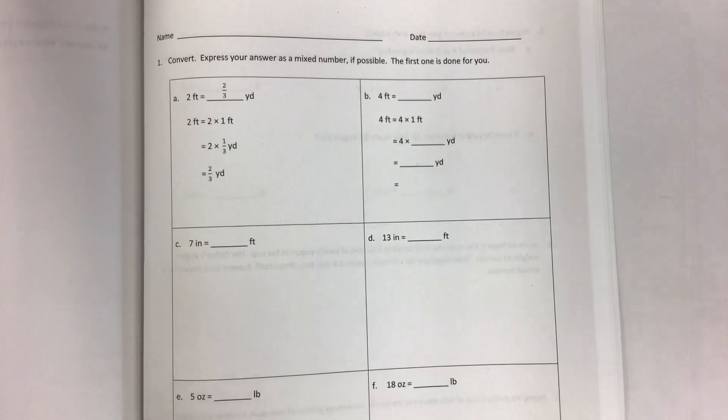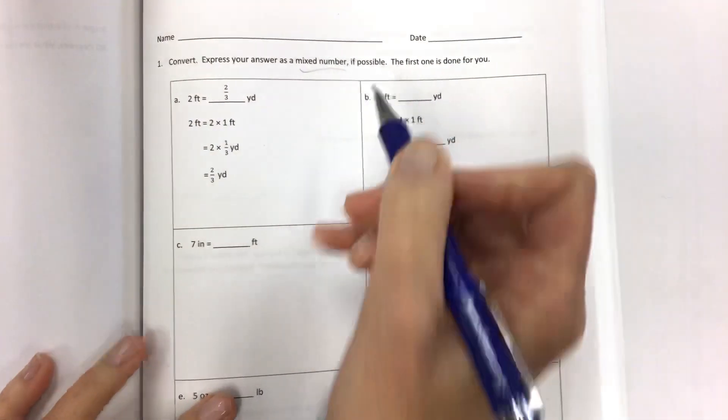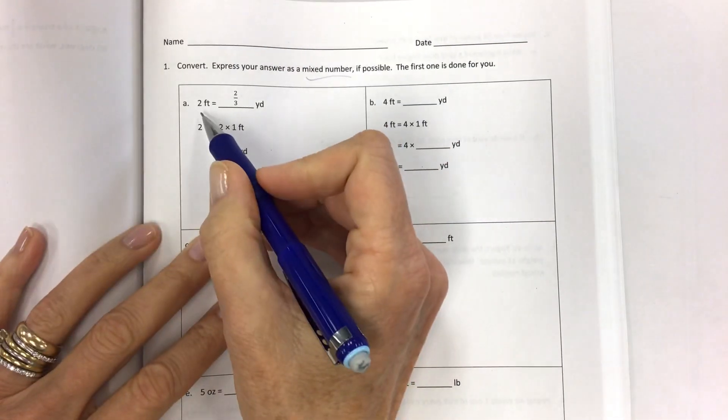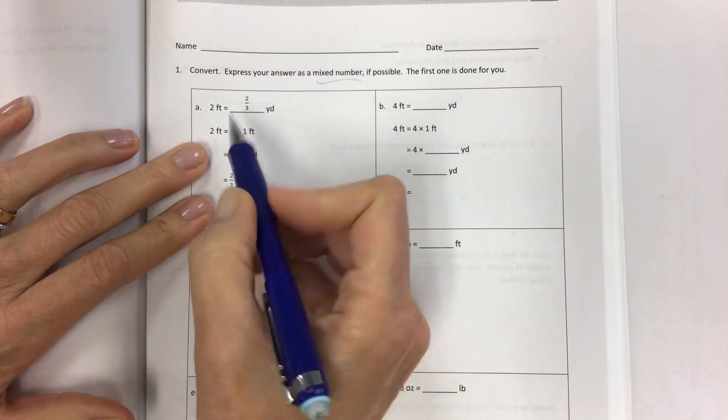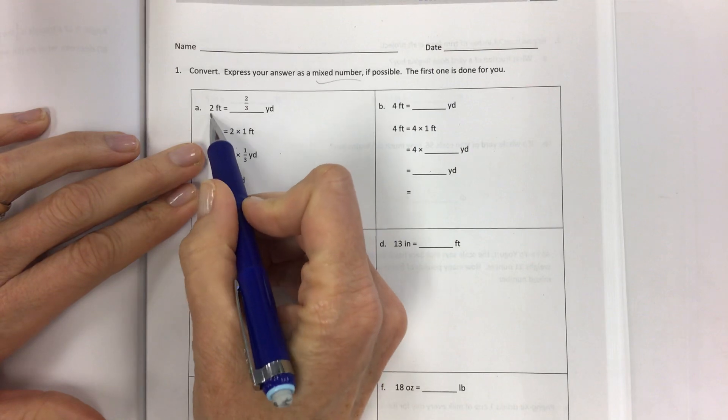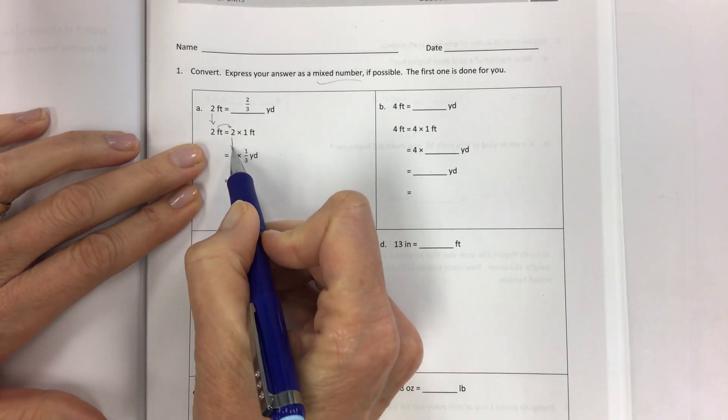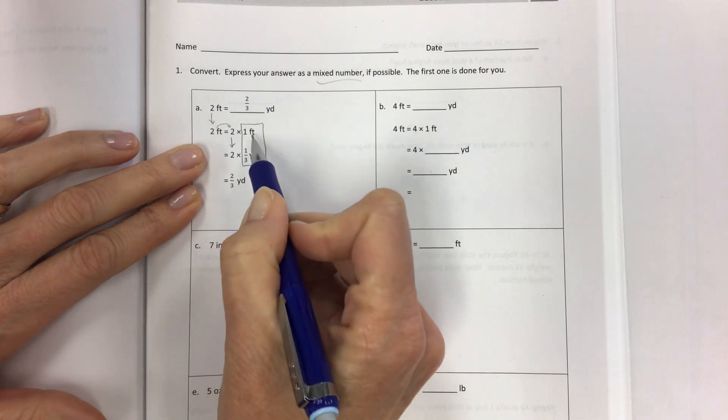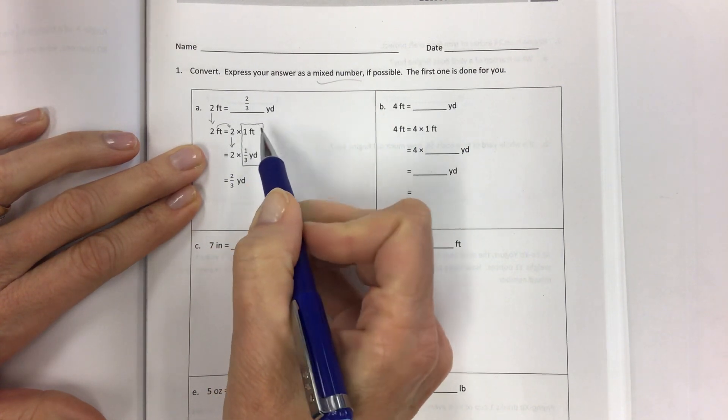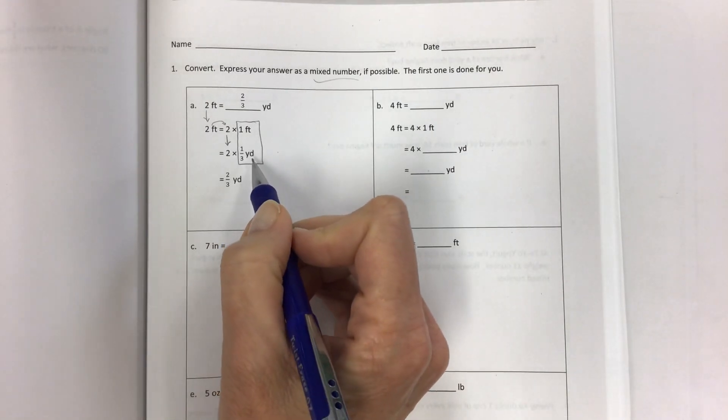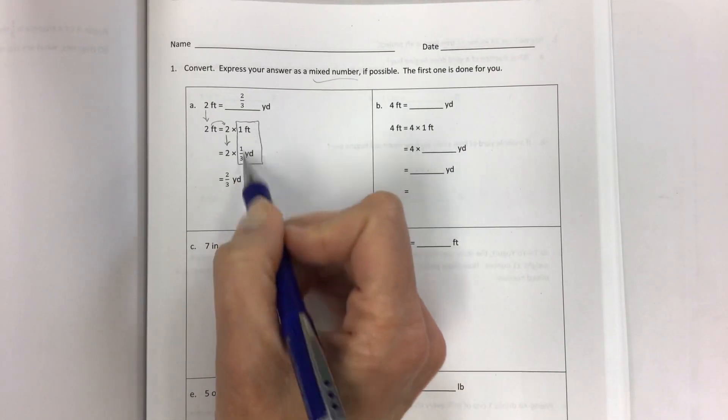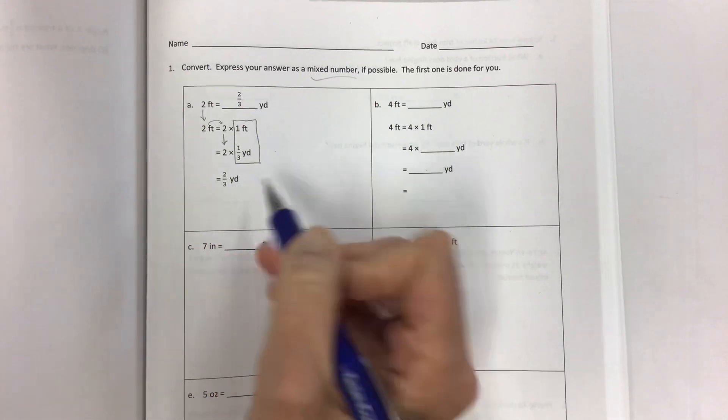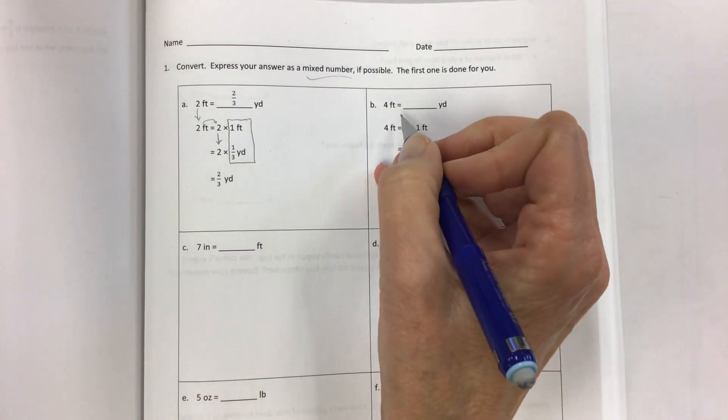Convert. Express your answer as a mixed number if possible, the first one is done for you. Two feet equals two-thirds of a yard. If you take this first amount, remember copy, copy, copy, times 1 of the old, and then the equivalent of the new. So 1 foot is one-third of a yard. So that's where you're getting that. And then you set it up. Two times 1 over 3, which would give you two-thirds. So let's get to it.